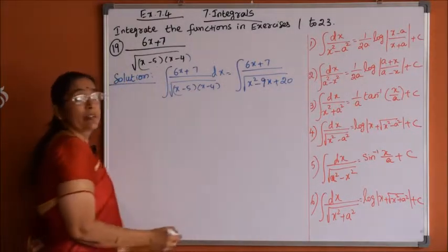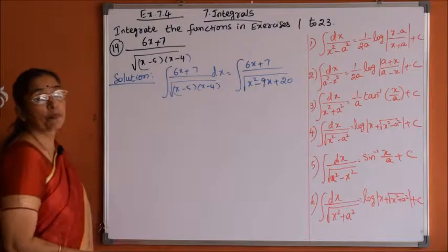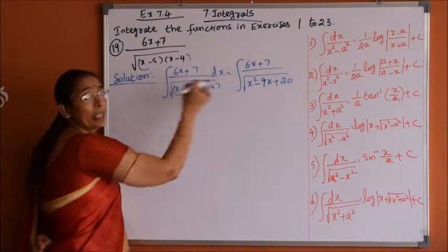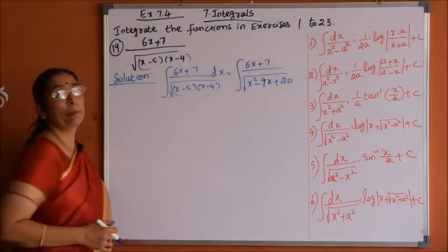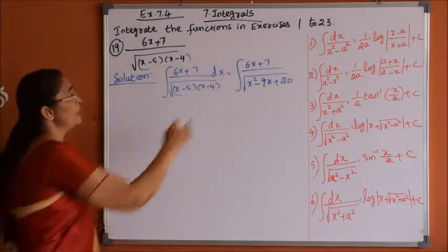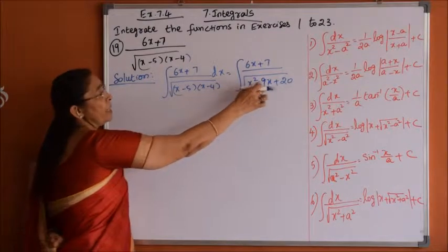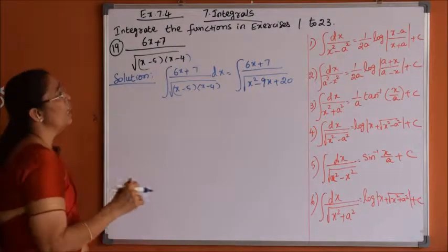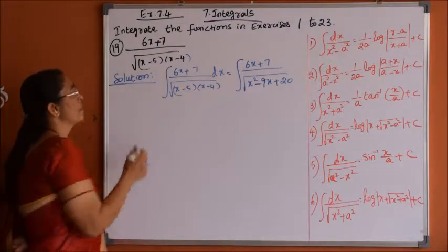Now what is our next step? We have to try to bring this in the form of a perfect square. Since the 2ab term is negative, we will get the x minus a whole square form.